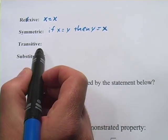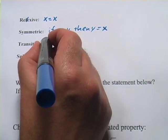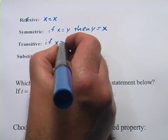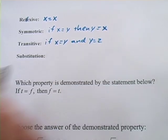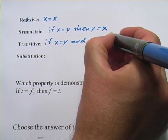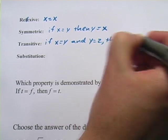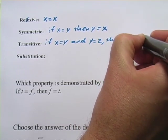Now the transitive property gets a little trickier. It says if x equals y and y equals z, I bet you can see where this is going, then x equals z.